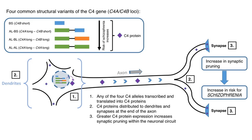Moreover, the two loci are linked to the HLA, or the human analogue of the major histocompatibility complex on the short arm of chromosome 6, whereas previously they were believed to have been expressed by two codominant alleles at a single locus. In gel electrophoresis studies, O'Neill et al. identified two genetic variants.